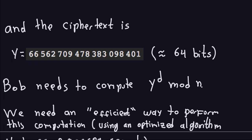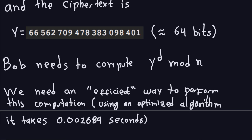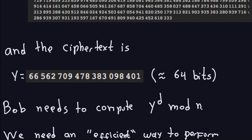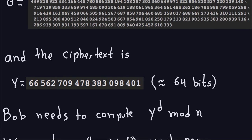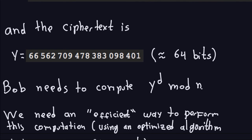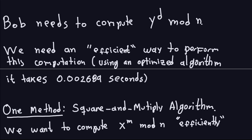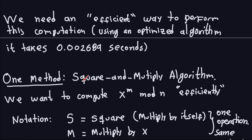Using an optimized algorithm that computes this in a fast way, it took only 0.002689 seconds — a very small amount of time considering the numbers involved. This is using the optimized algorithm which we haven't seen yet. The only thing to take from this is the importance of finding a fast way to compute modular exponentiation, because we need it for RSA. One method I'll introduce and explain in detail in the next video is the square-and-multiply algorithm.